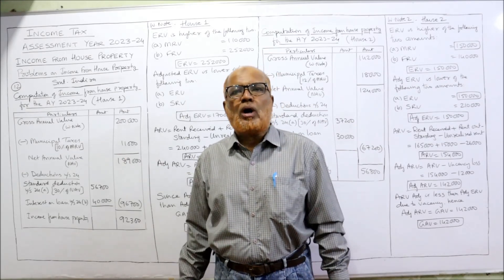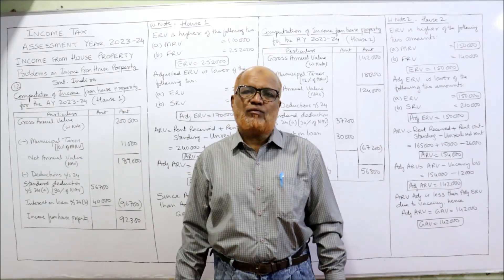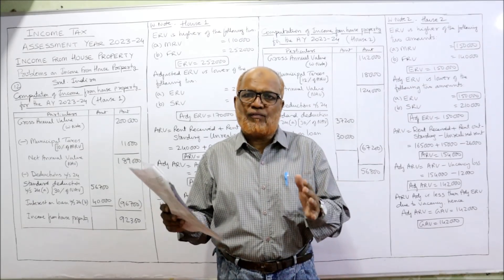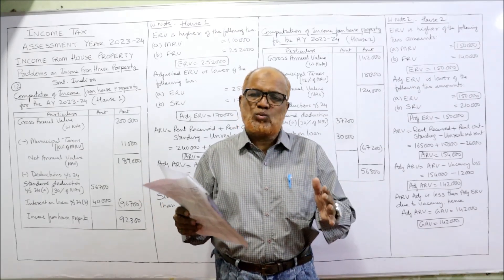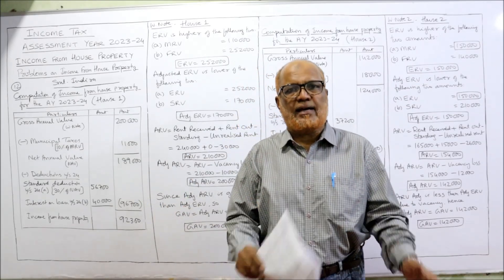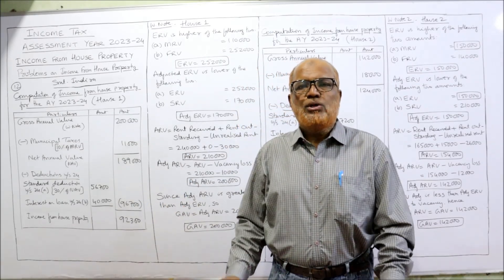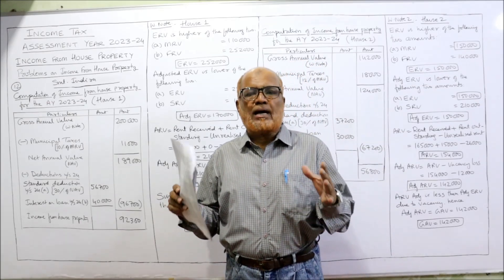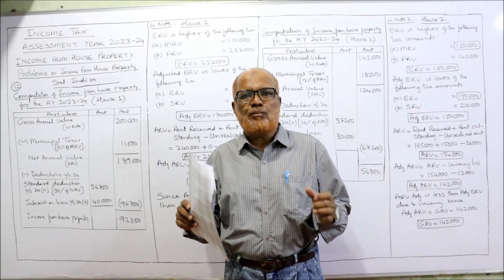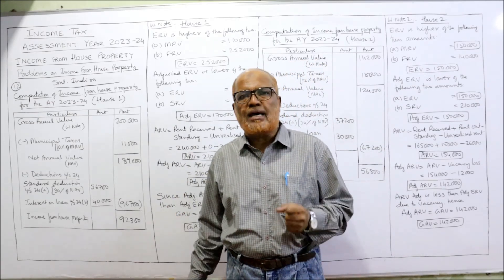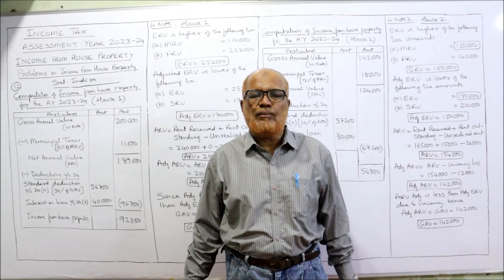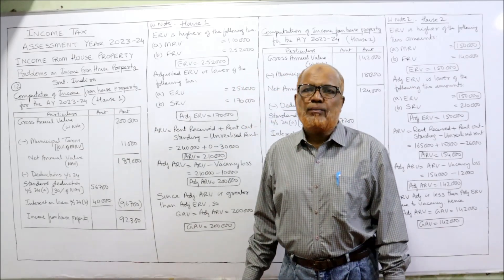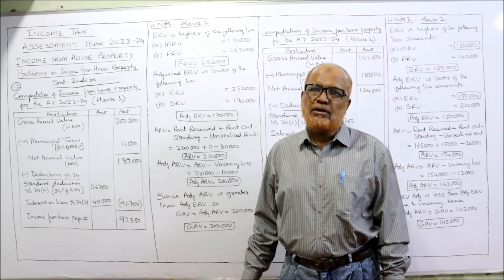In this problem, two houses are there. We have to compute income from house property of the first house as well as the second house. If you are watching all the videos, you might be in a position to attempt any problems on computing the income from house property.